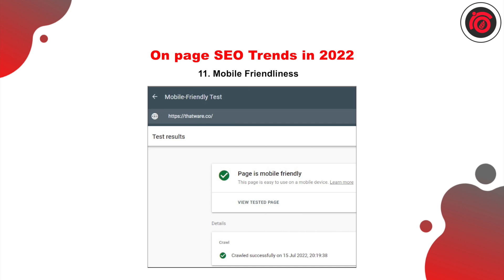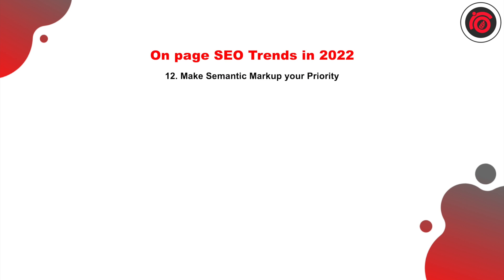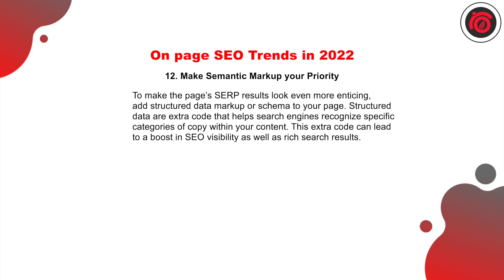Last but not the least, make semantic markup your priority. Having a proper schema markup can put good vocabulary into the search engine's knowledge base about what your content is trying to say and what information it is giving to users. Having a proper schema markup that speaks to the detailed information regarding videos, products, images, or services and offerings of your business can be highly important, as it can help you get an edge over your competition.